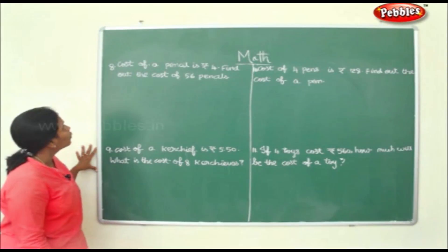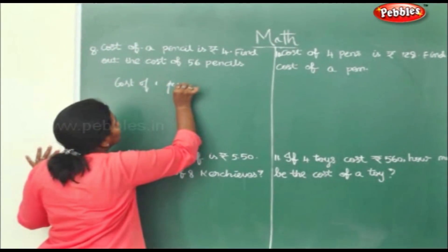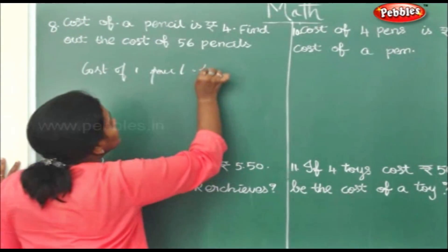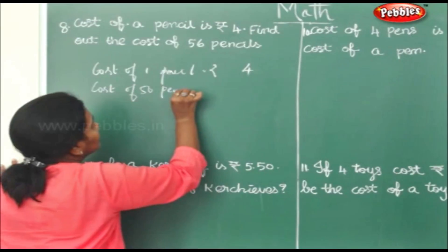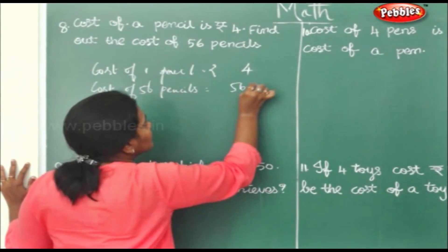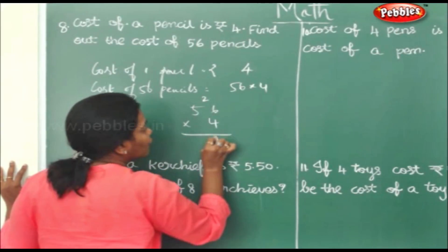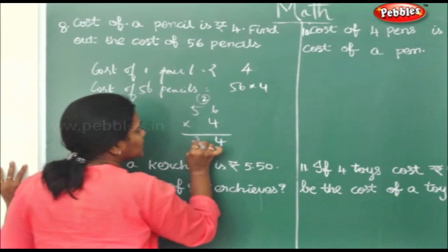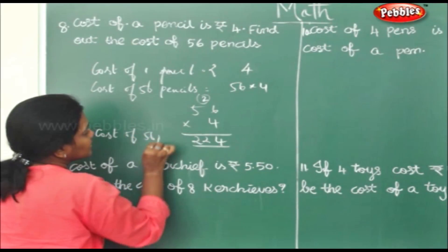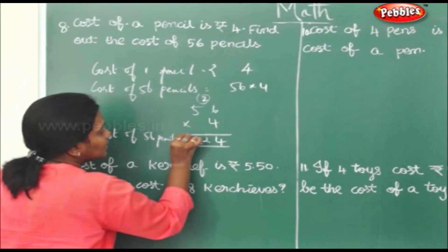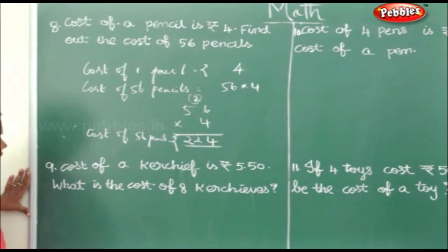Cost of a pencil is rupees 4. Find the cost of 56 pencils. Cost of 56 pencils equals 56 into 4. 6 fours are 24, 5 fours are 20, plus 2 carry gives 22. So cost of 56 pencils equals rupees 224.